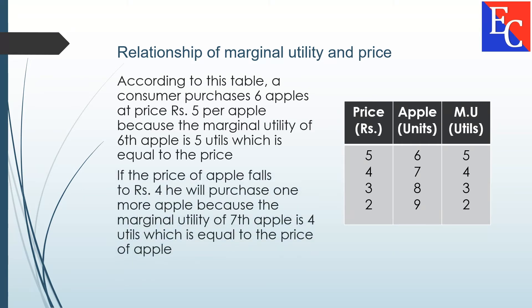If the price of an apple falls to 4 rupees, he will purchase one more apple, because the marginal utility of the 7th apple is 4 utils, which is equal to the new price of the apple.